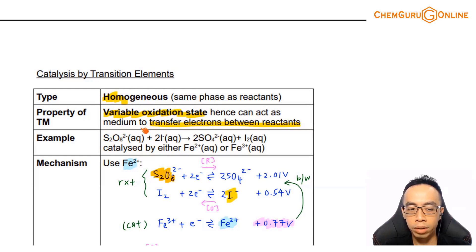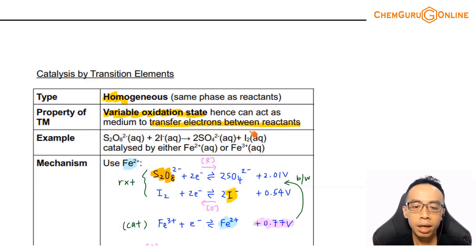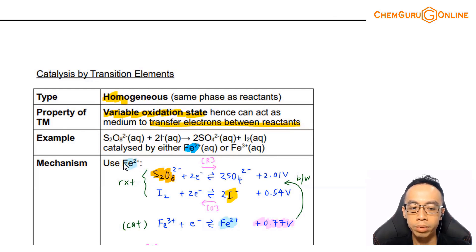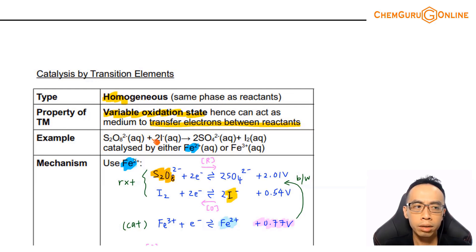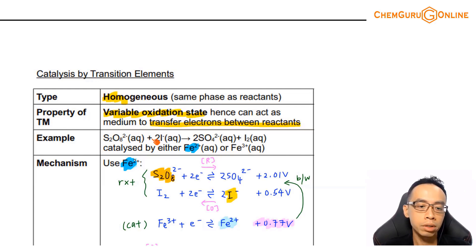A classic example is the reaction between S₂O₈²⁻ and I⁻ to give sulfate and iodine, catalyzed by either Fe²⁺ or Fe³⁺ — we will use Fe²⁺ as an example. Notice that both reactants are negatively charged, and this is the reason why the reaction is slow: they repel each other, so the rate of reaction is slow and kinetically not feasible.